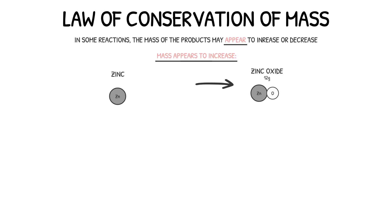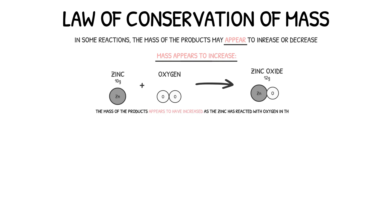For example, when zinc is heated in air, zinc oxide is produced. The mass of zinc oxide produced will be more than the mass of zinc that has reacted, and so the products of the reaction will appear to have increased in mass. However, when the zinc was heated in air it would have reacted with oxygen gas. Because the oxygen has not been measured or accounted for, it would seem the reaction has gained mass. Despite this, the law of conservation of mass tells us that the mass of the zinc and oxygen that reacted would be the same as the mass of zinc oxide produced.